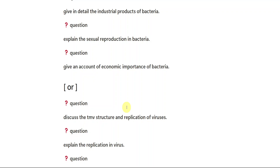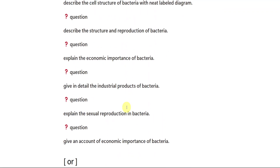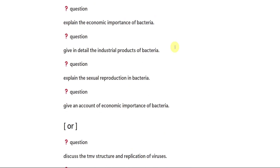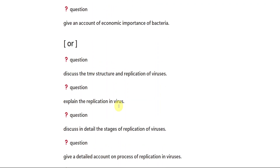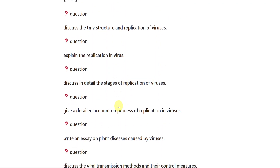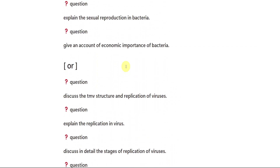In each question, you will be having a choice — A or B. For example, in question nine, you will be having A or B. So if you are perfect with the above questions, you will be able to attempt question nine A. If you are perfect with the below questions, you will be able to attempt question nine B. I hope you understood what I am trying to say. If you didn't understand anything, please let me know in the comment section. I will clarify your doubt.